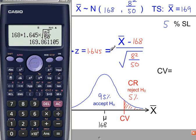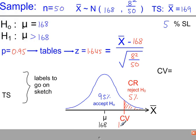So rearranging the formula here to work out this critical value that goes here, we get 169.9.